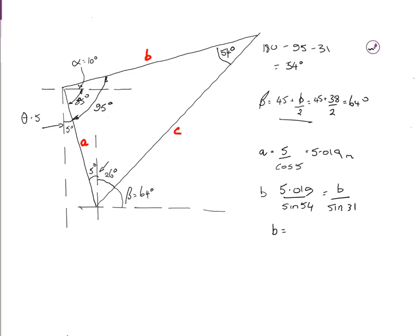And similarly, C from 5.019 over sin 54 equals C over sin 95. It goes to C equals 6.180 meters. I'll write them in here, C equals 6.180, B equals 3.195, and A equals 5.019.